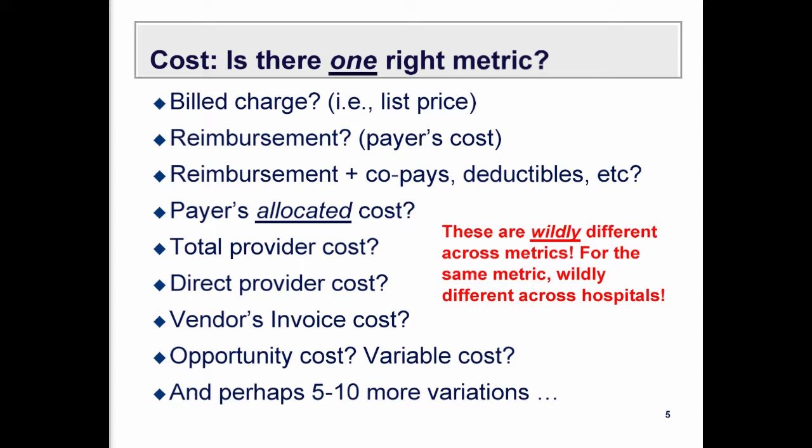The costs we are talking about are all over the map — there isn't one metric. The highest reported cost is the bill charge that shows up on a patient's bill. That's a list price; very few patients or payers actually pay full bill charges. At the other extreme, the lowest way to measure cost might be through invoice cost. The same metric can yield entirely different reported costs across hospitals because overhead is allocated differently.